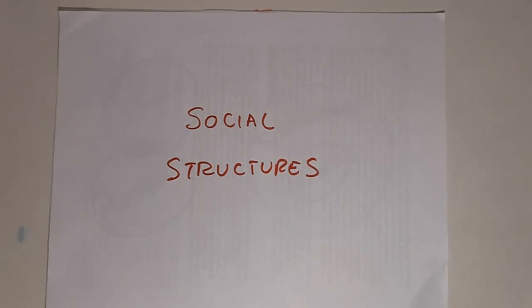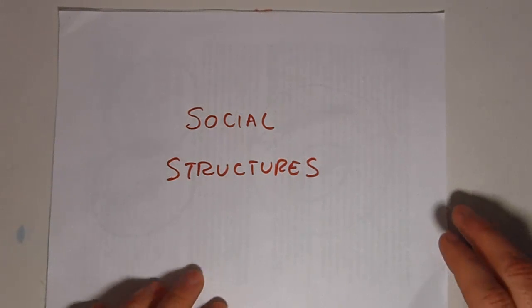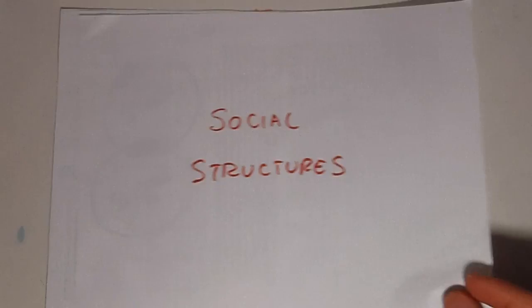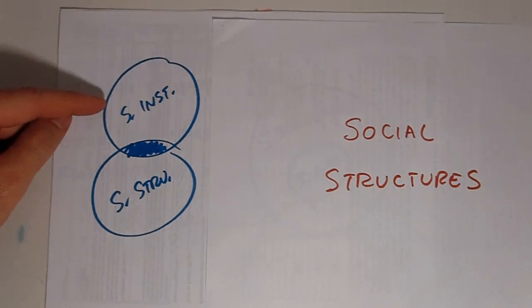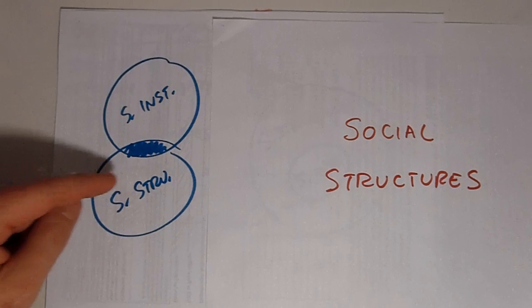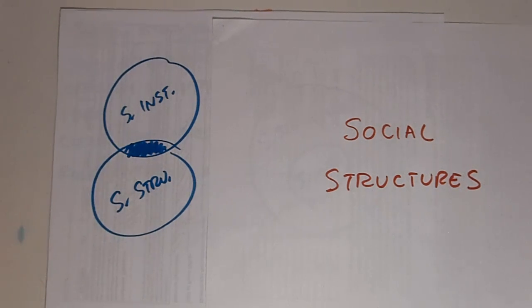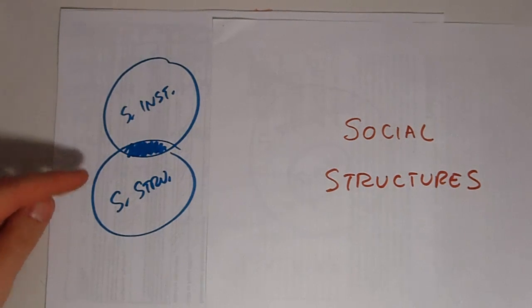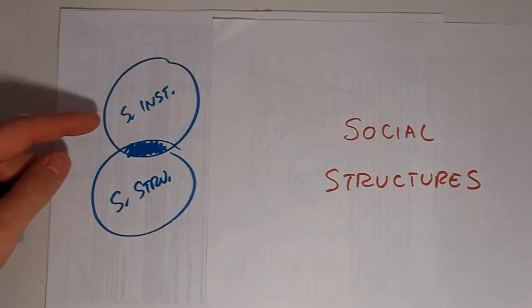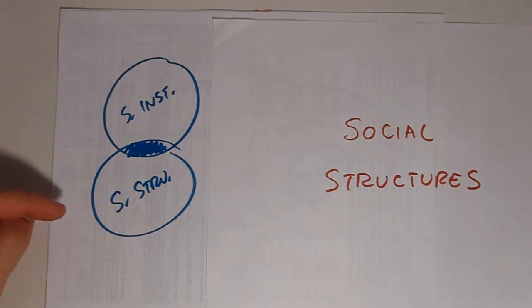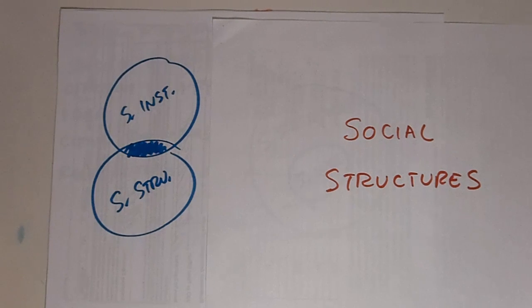An easy way to understand social structure is by comparing it to a similar term, social institution, which was defined in another video. If we were to imagine the relationship between these two terms graphically, we might do so in one of two ways. If we draw them as two circles — social institution and social structure — we see that there is an area in which they overlap. This is because it can be very difficult to understand when something is a social institution or when it's a social structure, where one ends and the other begins.